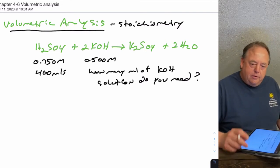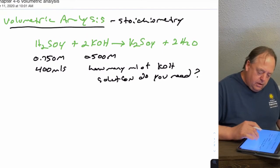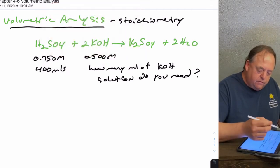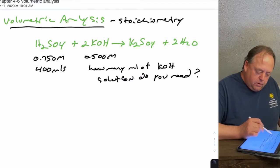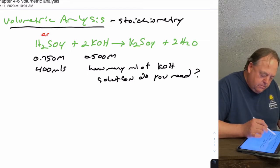So this is just a stoichiometry problem. If you're doing this reaction in lab, this is an example of an acid-base reaction. H2SO4 lost hydrogens and KOH gained hydrogens, so this is an acid and this is a base.